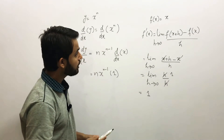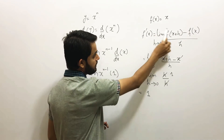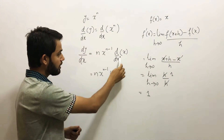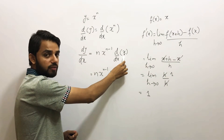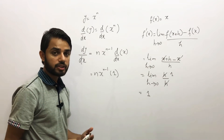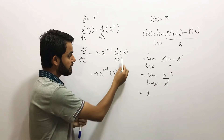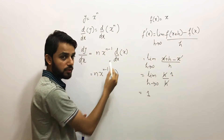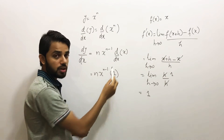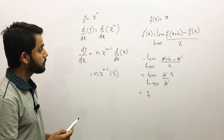So if f(x) = x, by the definition of the limit its derivative gives you 1. This is how we write that the derivative of x with respect to x is 1. It doesn't only apply to x with respect to x — if you have y with respect to y or u with respect to u, it also gives you 1. This is essentially the power rule.